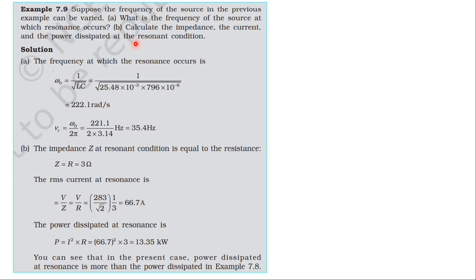From the NCERT textbook, from the topic alternating current, in example 7.9. Suppose the frequency of the source in the previous example can be varied. What is the frequency of the source at which resonance occurs? Calculate the impedance, the current, and the power dissipated at the resonance condition.